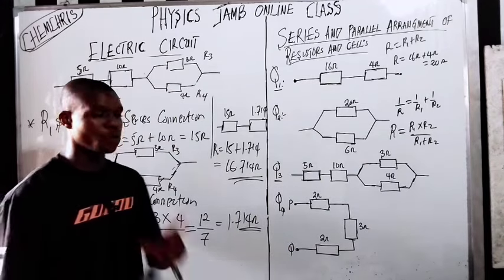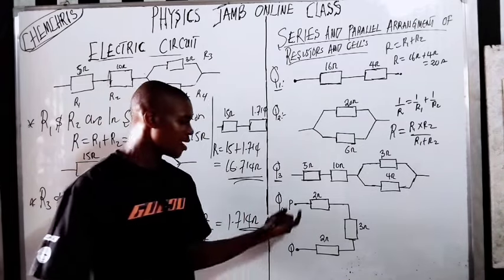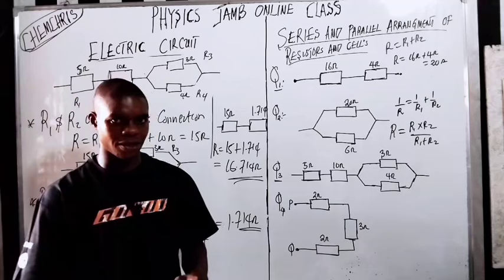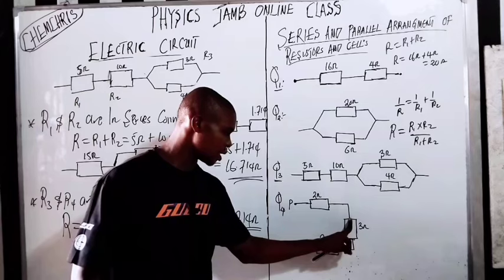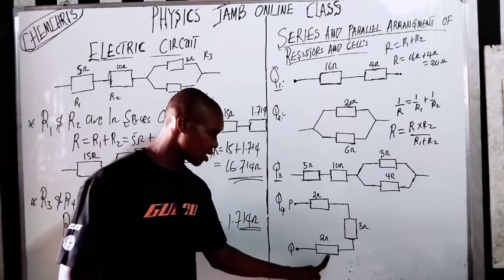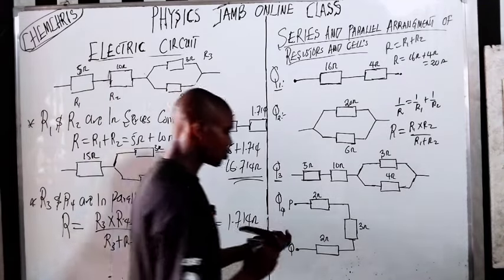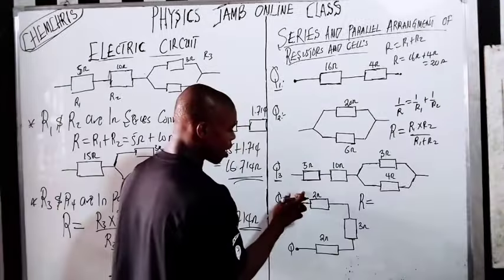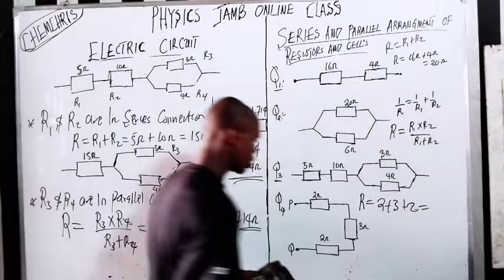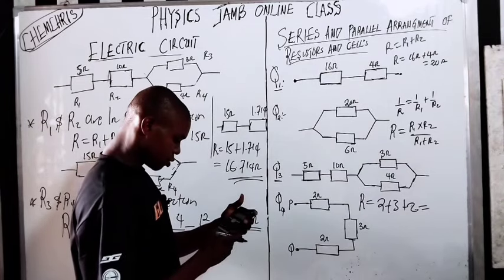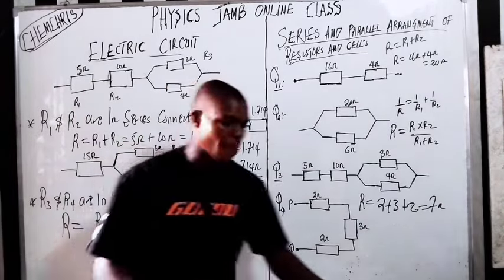Now for question four — is it in series or in parallel? Of course it's series, because the positive point of one resistor is connected to the negative point of the next, and the positive point of that one is connected to the negative point of the following one. So for series connection, the equivalent resistance is R1 plus R2 plus R3 equals 2 plus 3 plus 2 equals 7 ohms.